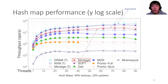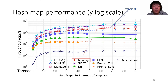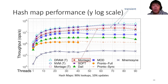This slide shows the throughput of Montage among other persistent or transient implementations of hash maps. Note that the y-axis is log-scaled. Montage has significantly better performance than all other persistent hash map implementations except Soft, which has a significant drawback in that it keeps a copy of all data on DRAM, so the size of the hash map is bounded by DRAM capacity. For more information about experiment setups and results, please refer to the paper.